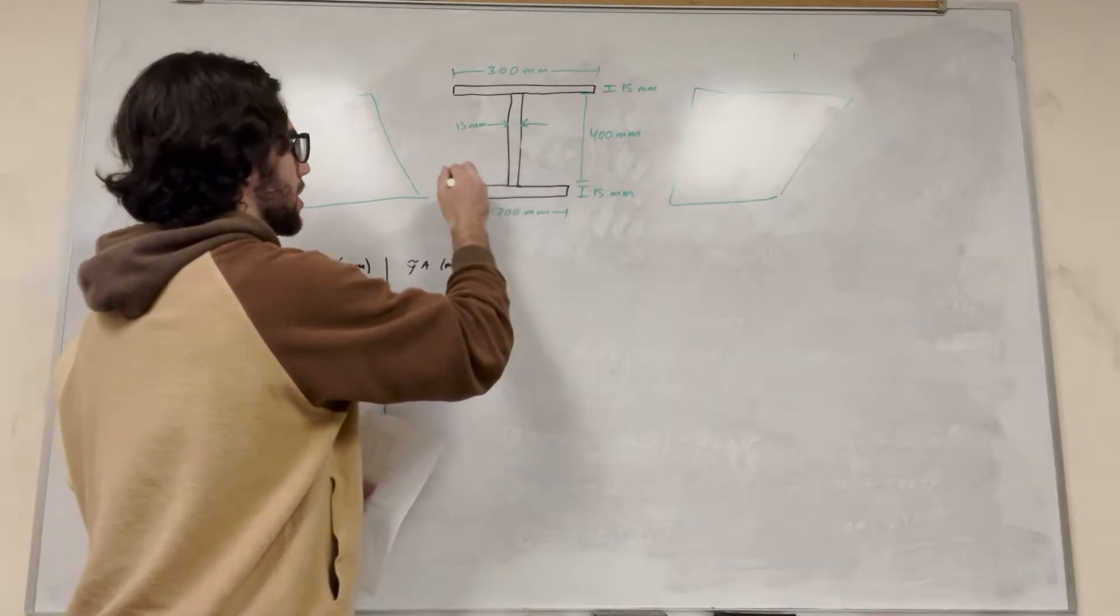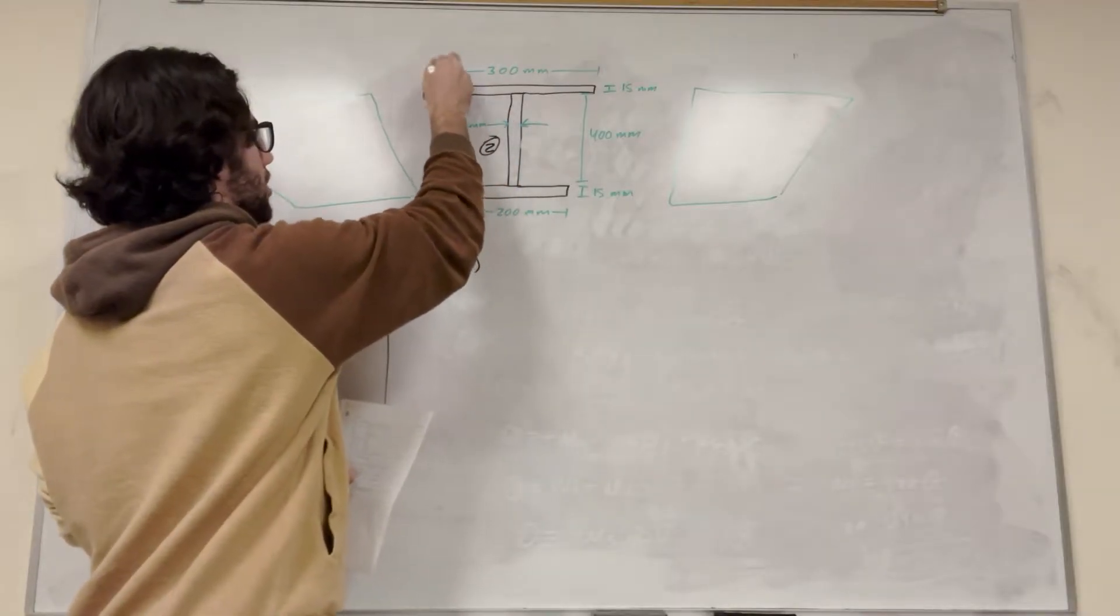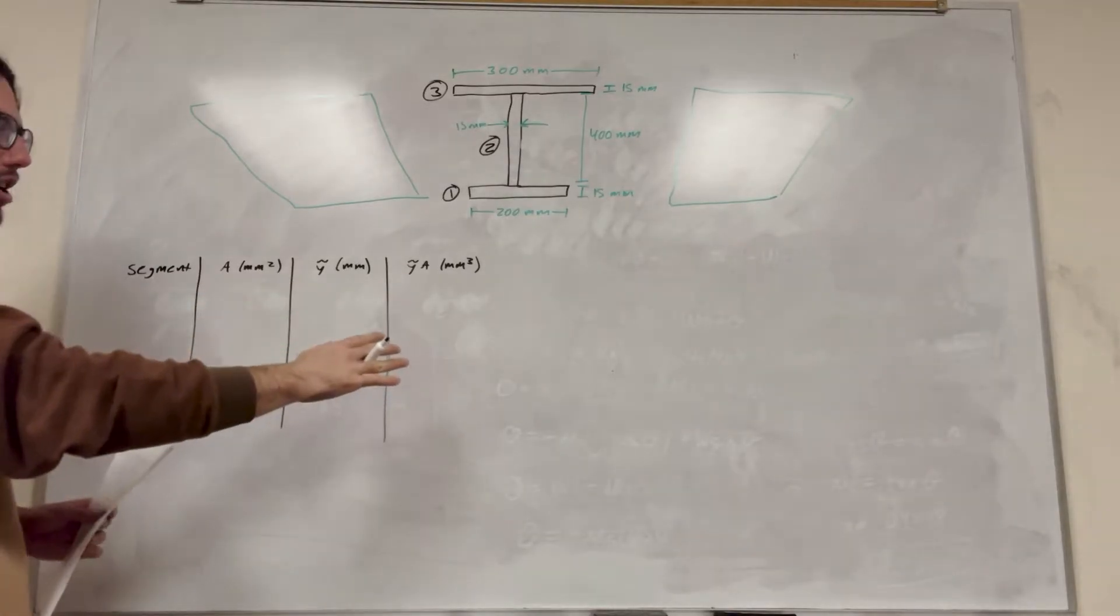So we're going to label these. We're going to label this one to be one, label this one to be two, and label this one to be three. So now we have three rectangles, and we're going to plug them into our chart here.